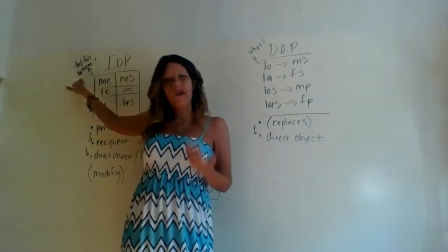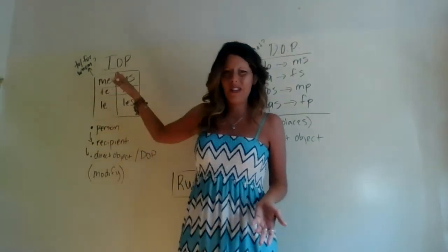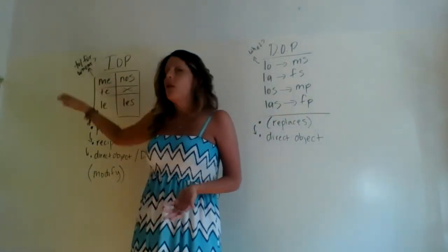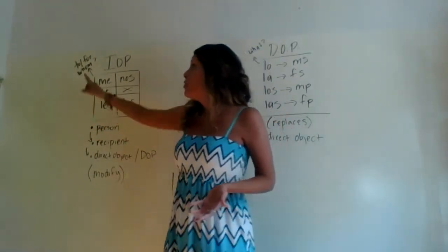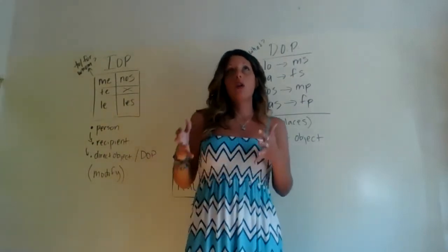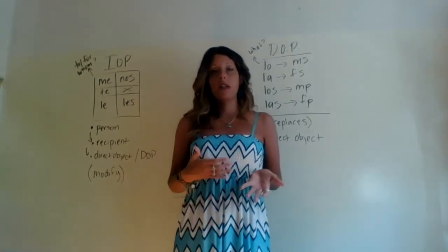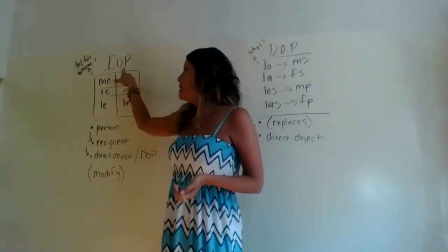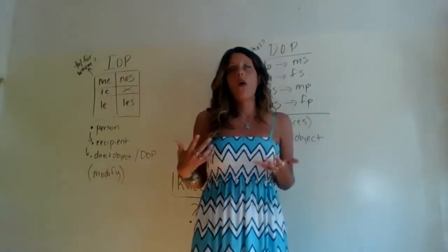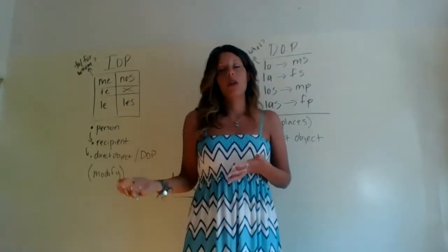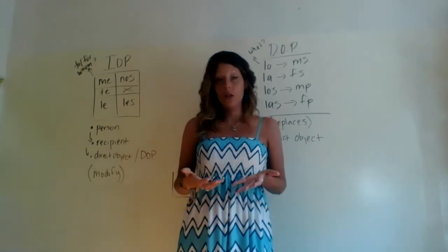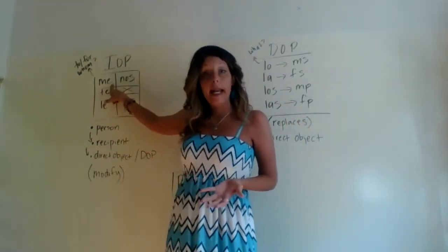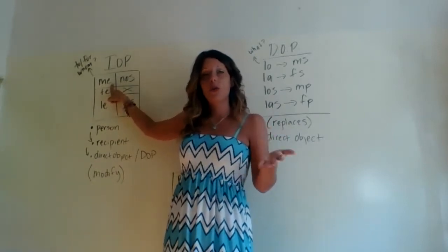People often ask what IOPs mean in English. I always try to steer away from that and say, don't think so much about what it means in English, but just how do we utilize it in Spanish? But I know that's the go-to for a lot of students. So when we have indirect object pronouns, we can often say that in English they equate to something like 'to or for whom.' When we use IOPs in Spanish sentences, we're answering the question: to whom or for whom? The closest English translation: 'me' can equate to 'to me' or 'for me.'